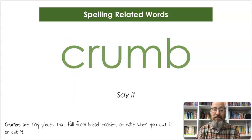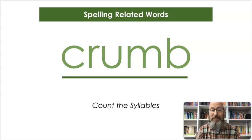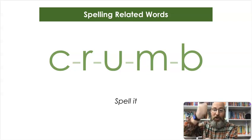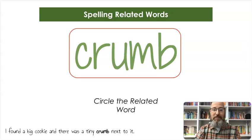Our next word is crumb. Crumbs are tiny pieces that fall from bread, cookies, or cake when you cut it or eat it. Count the syllables — crumb. A lot of one-syllable words this week. Let's spell it: C-R-U-M-B, crumb. And let's write it: C-R-U-M-B. Circle the whole word again. I found a big cookie, and there was a tiny crumb next to it.